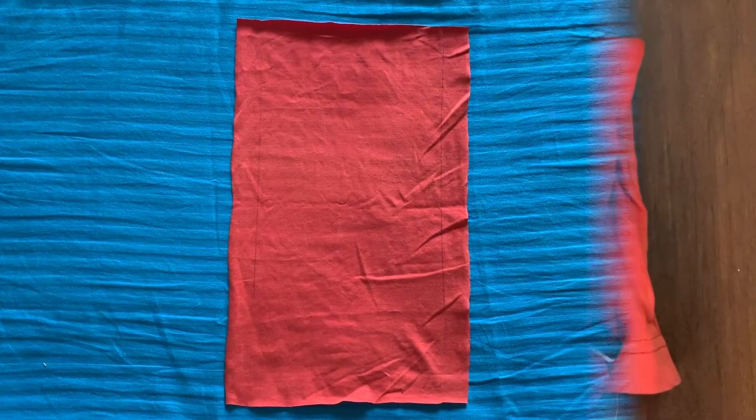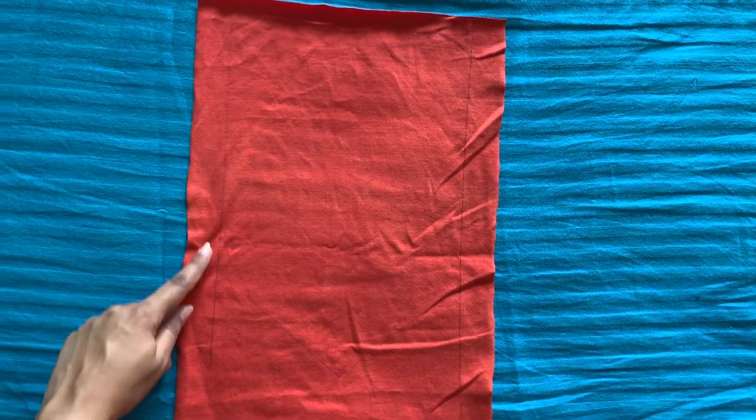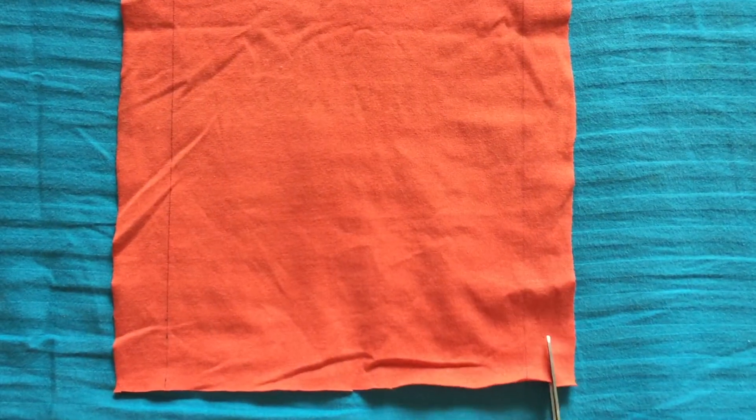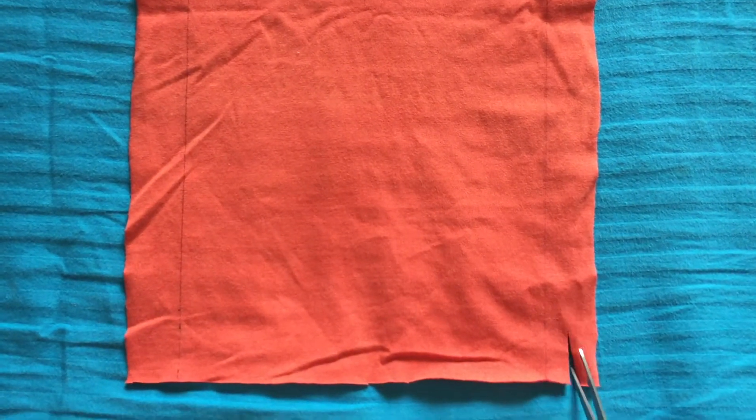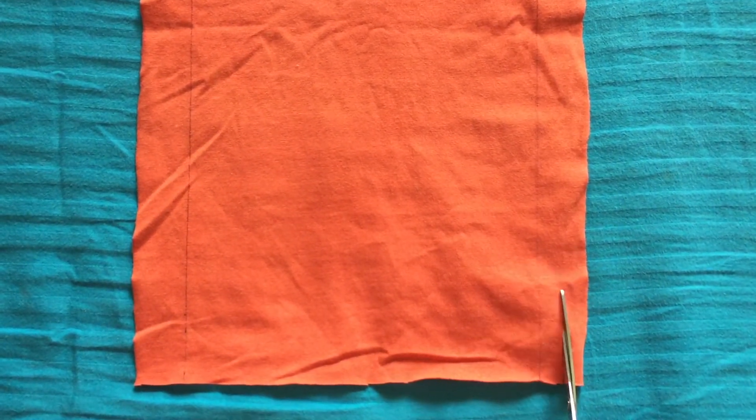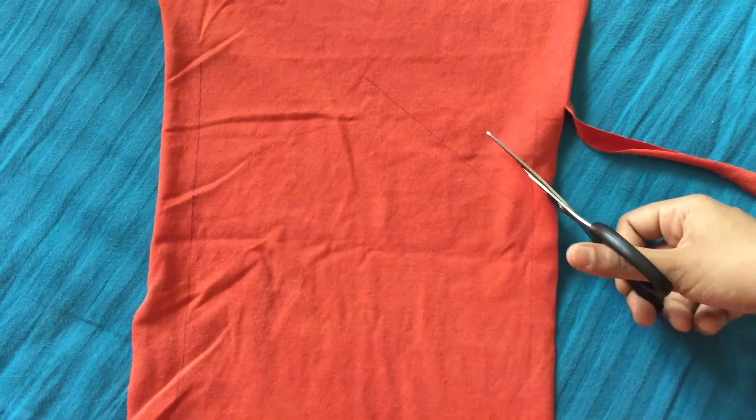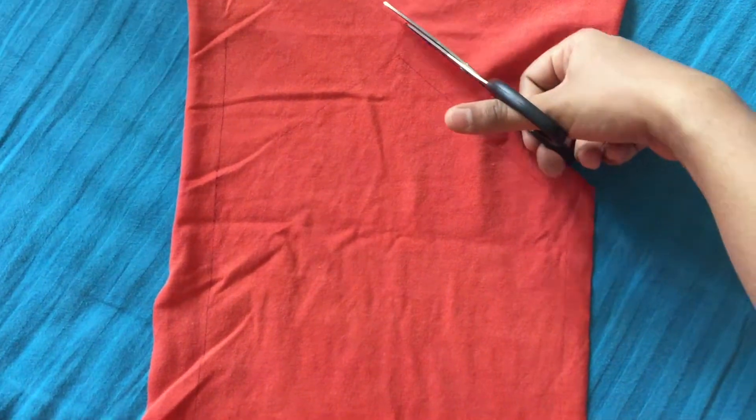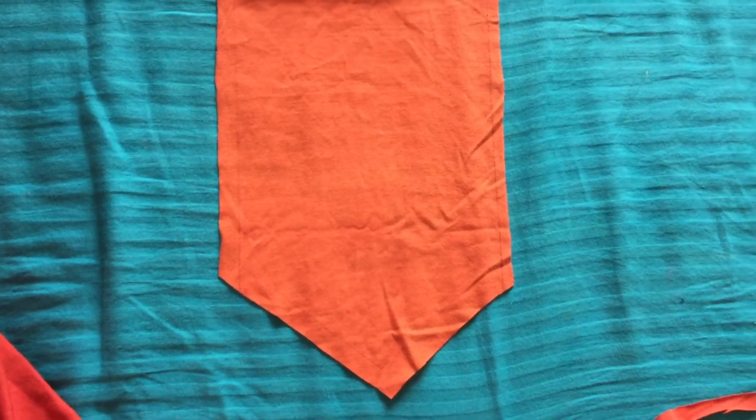Next DIY, we need this type of cloth. I have cut out a piece from cloth. This is a rectangular piece. Basically we are going to make a banner. So I have drawn a banner shape from the pen. Now we will cut the shape according to this.